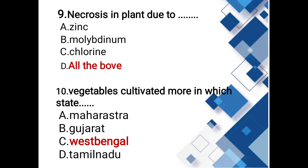Necrosis in plants due to zinc deficiency — options include molybdenum, chlorine, all of the above. The answer is all of the above. Necrosis refers to the death of plant cells.